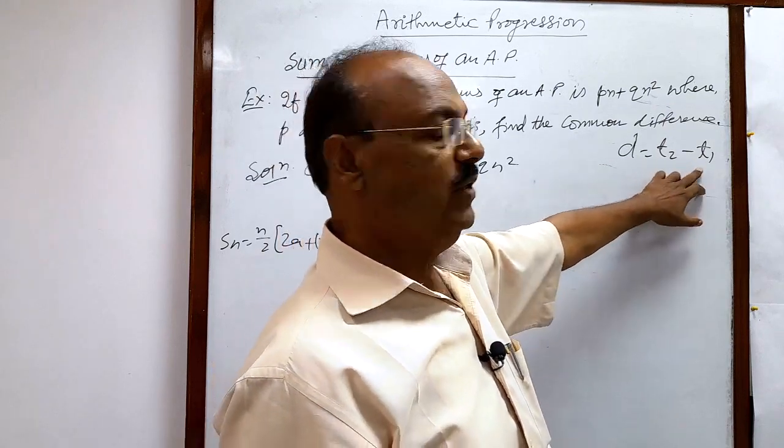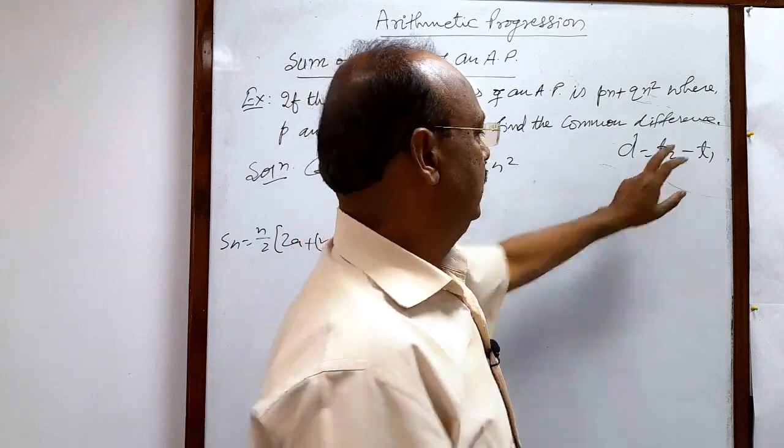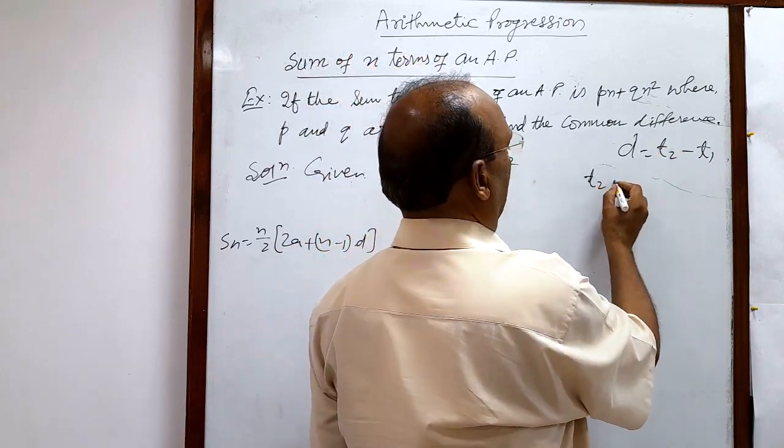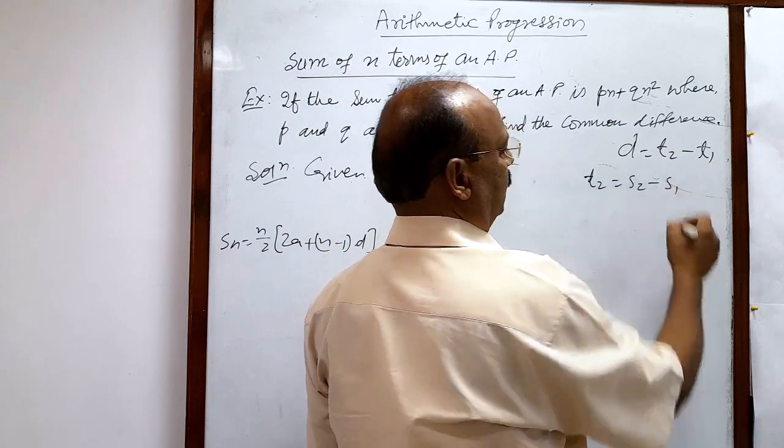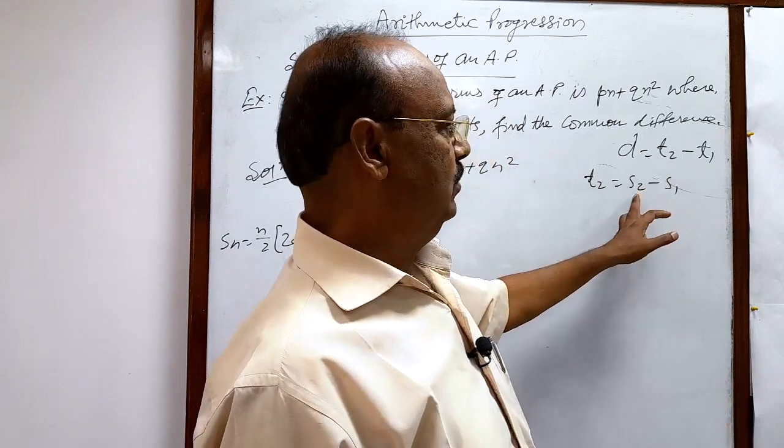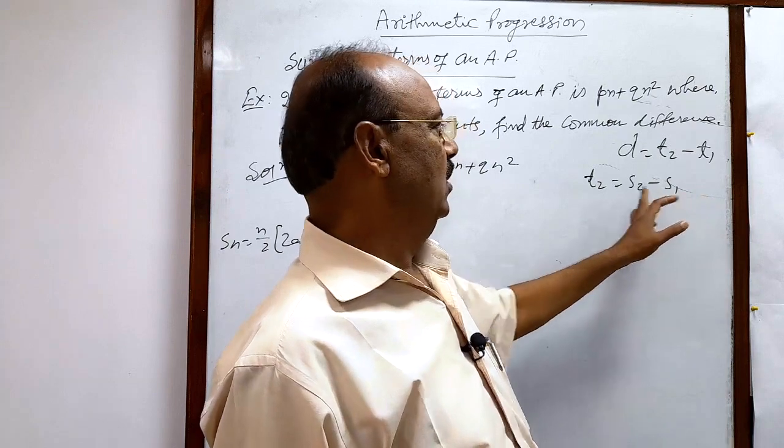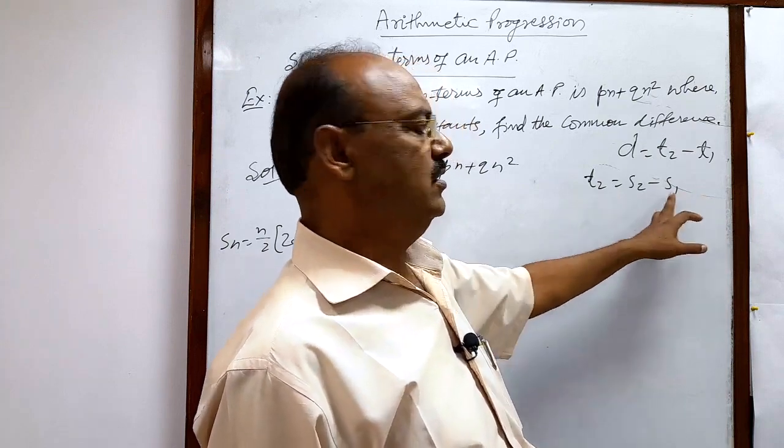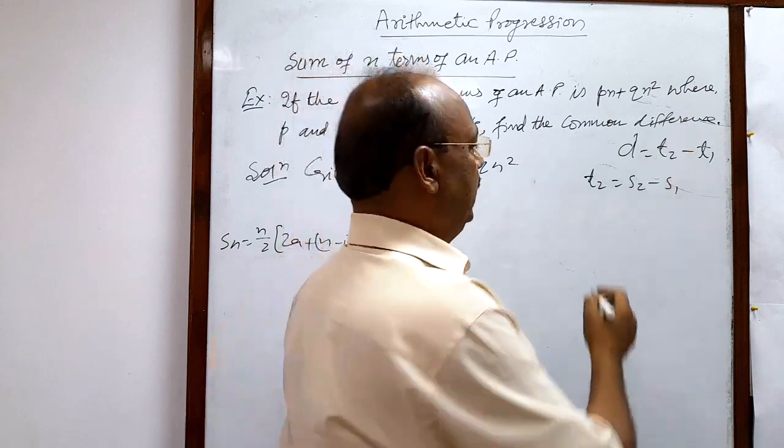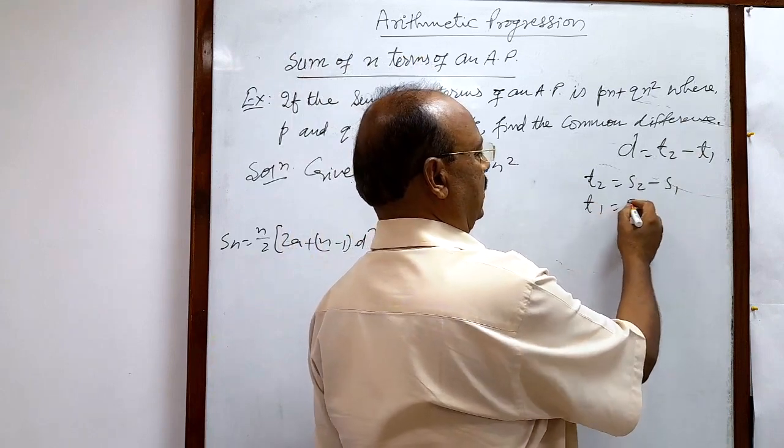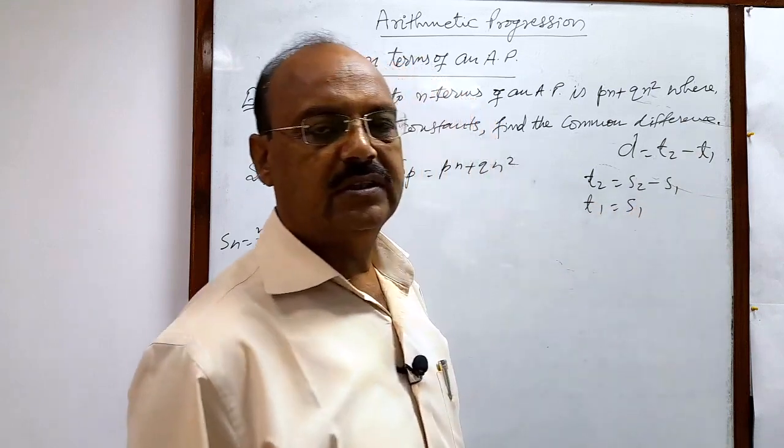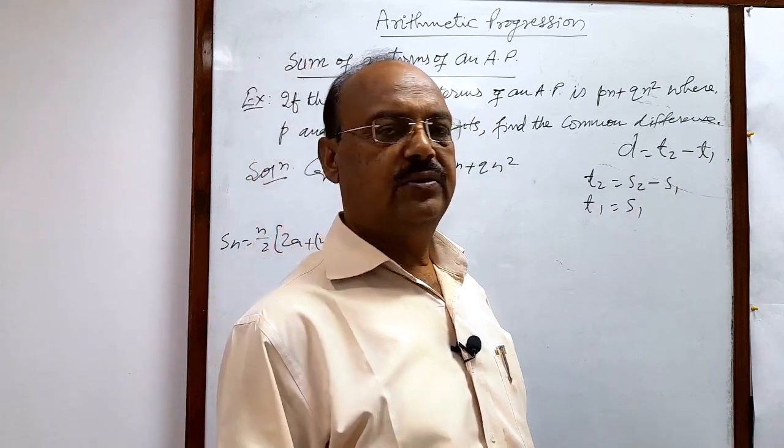And t2 minus t1, how to get t2? t2 will be equal to sum of first two terms minus first term. In this way we can get t2, and how to get t1? t1 is equal to nothing but S1. Sum of first term is equal to first term.